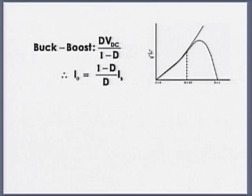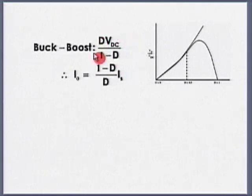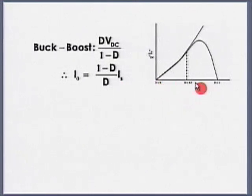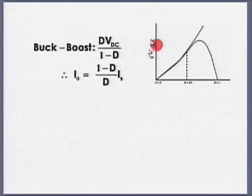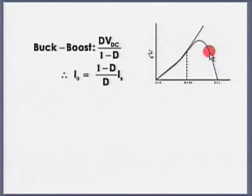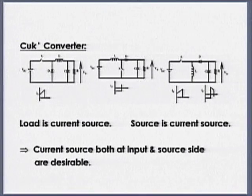We then discussed the buck-boost converter. The transfer function is given by D times Vdc divided by 1 minus D — again, for an ideal buck-boost. For D from 0 to 0.5, it is in buck mode; for D greater than 0.5, it is in boost mode. The transfer function says that as D tends to 1, V_naught tends to infinity. But the same issue that happens in a boost converter happens in buck-boost as well: as D tends to 1, V_naught tends to 0. The maximum ratio here also is of the order of 7 to 10.